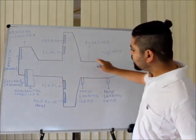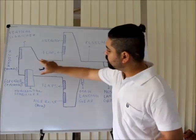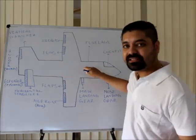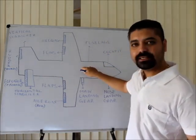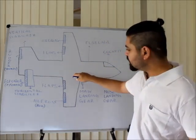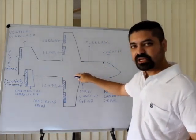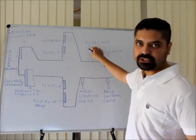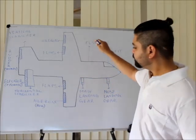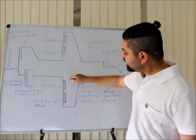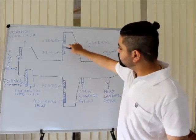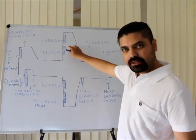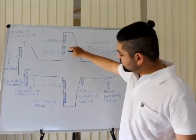Now coming to the fuselage — the fuselage is the body of the aircraft, apart from the wings. It is the body of the aircraft where the passengers are seated and where the cargo section is located.